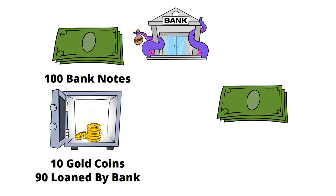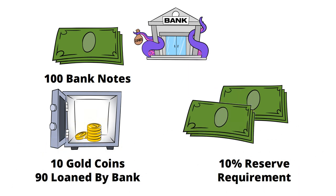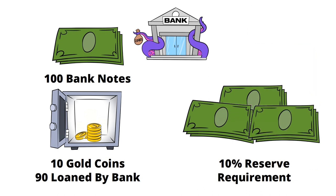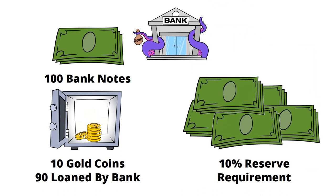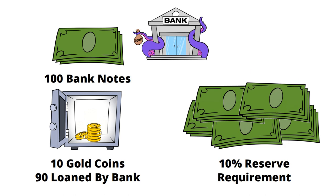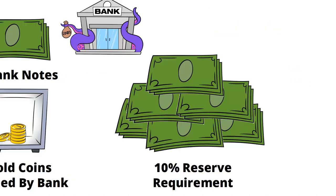Changing that to a 10% reserve would allow for an exponential increase in the money supply, given the way money can multiply in such a system. This increase in the money supply can give the economy the appearance of increased wealth.